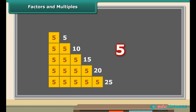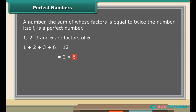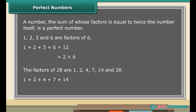A number whose sum of factors is equal to twice the number itself is a perfect number. For example, 1, 2, 3 and 6 are factors of 6. The sum of the factors 1, 2, 3 and 6 is 12, which is the same as 2 times 6. Hence 6 is a perfect number. Similarly, the factors of 28 are 1, 2, 4, 7, 14 and 28. The sum of the factors is 56, which is the same as 2 times 28. Therefore 28 is also a perfect number.